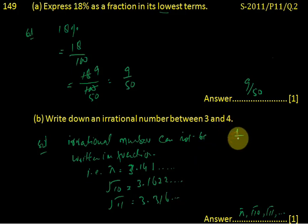1 upon 3, when we solve, becomes 0.33333 and so on. This is a repeating number after the decimal, so it's called a rational number.